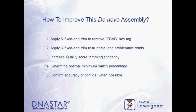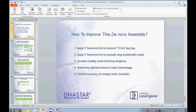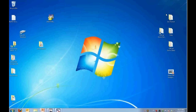To improve a de novo assembly that's running too long with problems on the ends of the data, we trim the 5' and 3' ends of the reads, increase quality score trimming, run multiple different assemblies to figure out the best match percentages and parameters, and then confirm accuracy.